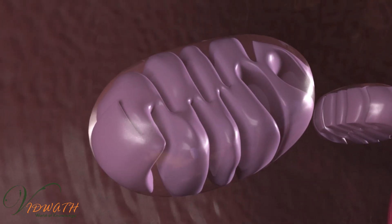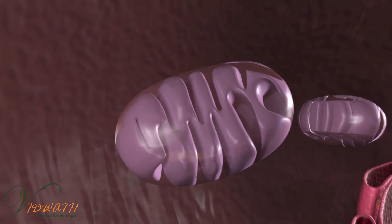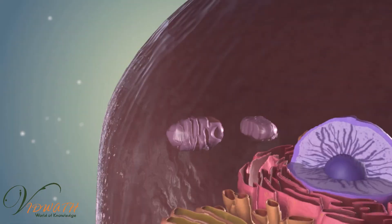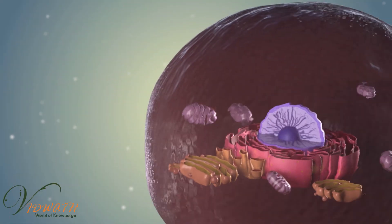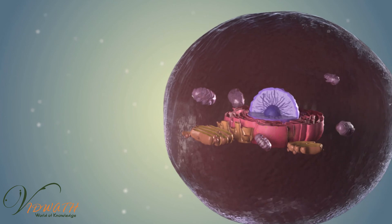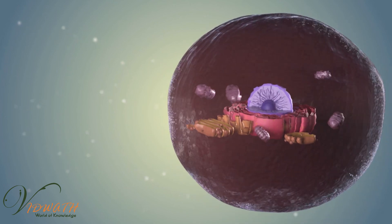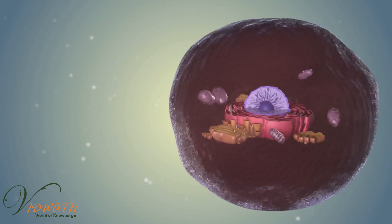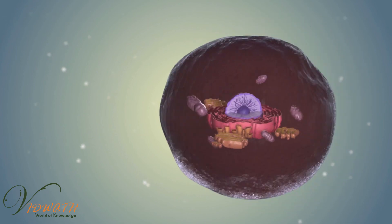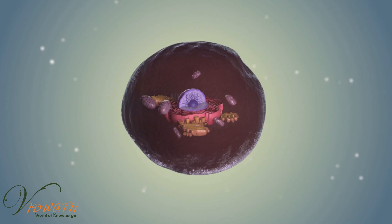All animals consist of eukaryotic cells. Animal cells are distinct from those of other eukaryotes, most notably plants, as they lack cell walls and chloroplasts and have smaller vacuoles. Due to the lack of a cell wall, animal cells can adopt a variety of shapes.